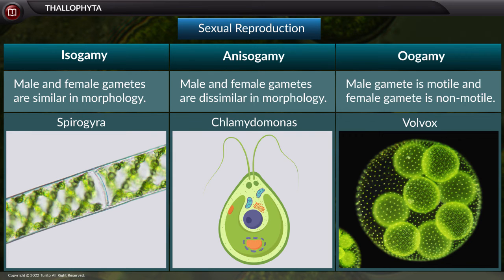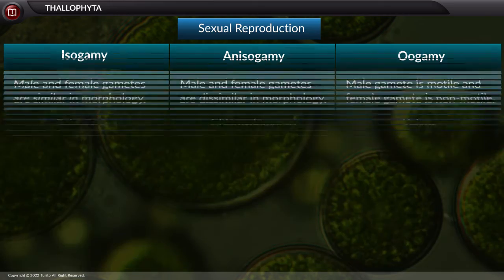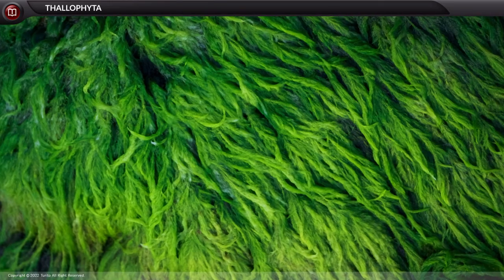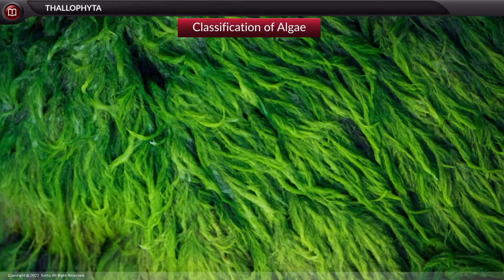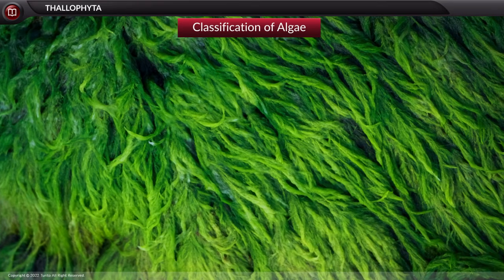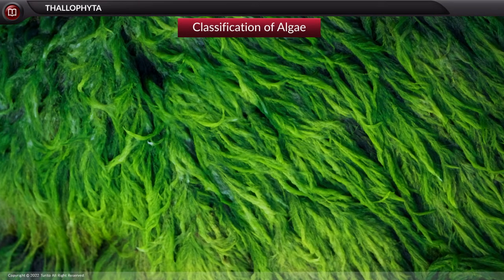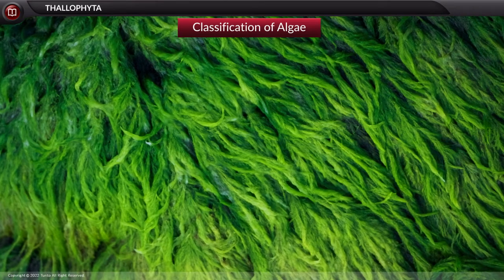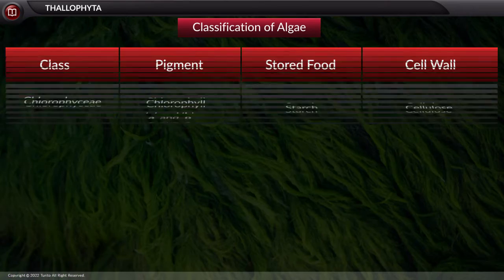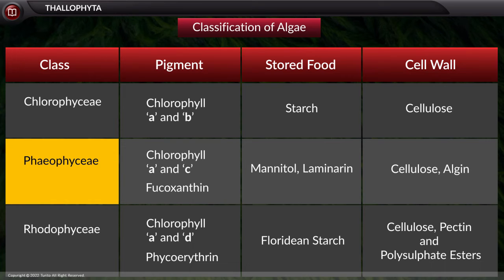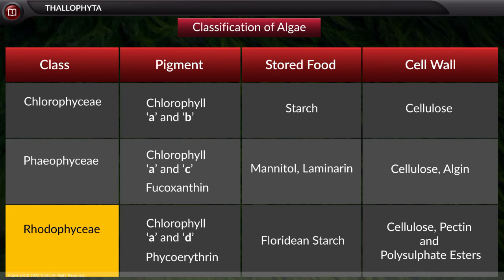These are the details of reproduction seen in algae. Let us now discuss the classification of algae. Based on the type of chlorophyll pigment present in them, algae are classified into three classes: Chlorophyceae, Phaeophyceae, and Rhodophyceae.